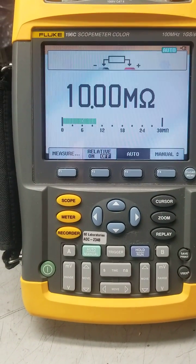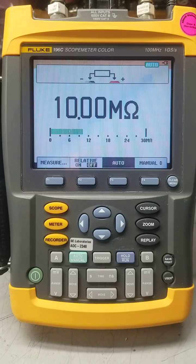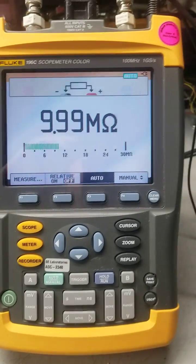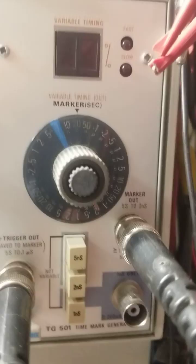We're going to check this beautiful Fluke 196C handheld oscilloscope to make sure every measurement is correct and accurate. We're going to use a Fluke portable calibrator, and to check out the scope at maximum speed we're going to use a Tektronix time mark generator.